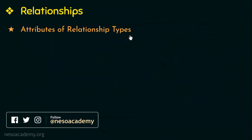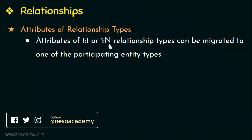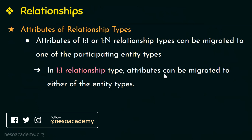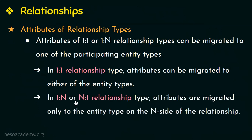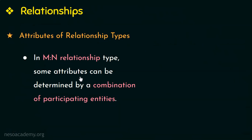Next, let us see attributes of relationship types. Attributes of 1:1, 1:N, or N:1 relationship types can be migrated to one of the participating entity types. In a 1:1 relationship type, attributes can be migrated to either of the entity types. In a 1:N or N:1 relationship type, attributes are migrated only to the entity type on the N side of the relationship. In an M:N relationship type, some attributes can only be determined by a combination of both participating entities, not by a single entity alone.